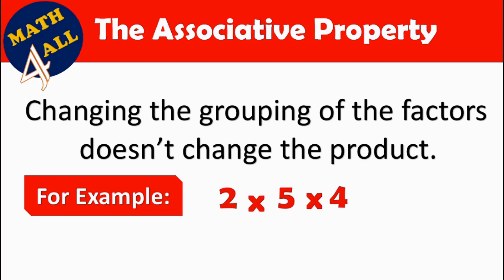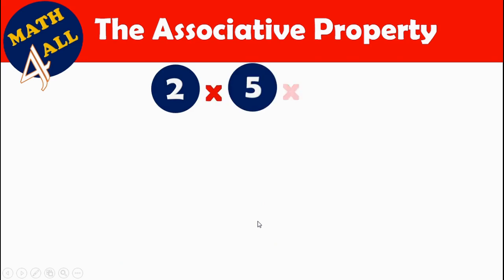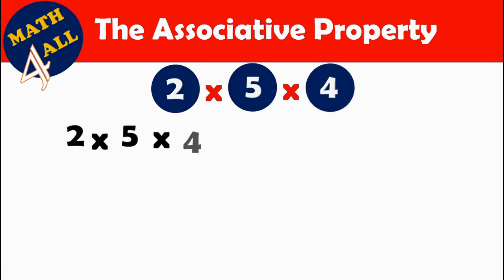3 digits, but where should we start? We could start with 2 by 5, or we could start with 5 by 4. The associative property tells us it doesn't matter which way we do it — we can choose which group of numbers we start to multiply. Let's explain it with 2 by 5 by 4, using two ways.